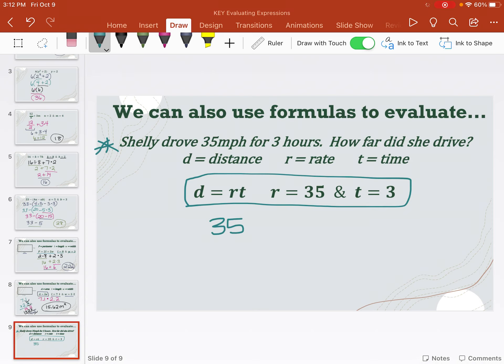So 35 was the rate, the R, times the time, T, which was three. And just do that multiplication. 35 times 3. 5 times 3 is 15. 3 times 3 is 9 plus 1 is 10. So we get 105. And then our unit, we're talking distance. So this M stood for miles. So 105 miles.